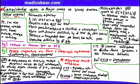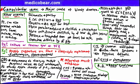Campylobacter jejuni can be an antecedent to reactive arthritis, also known as Reiter syndrome. Yersinia and Salmonella can also cause reactive arthritis, as can sexually transmitted infections and inflammatory bowel disease. Look for a triad of joint pain, ocular findings (uveitis and conjunctivitis), and urethritis or balanitis.